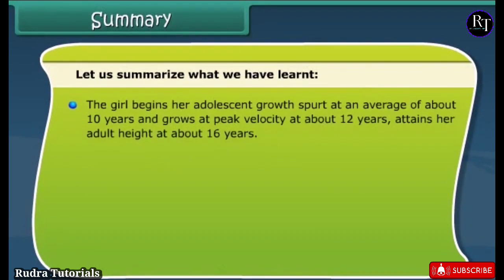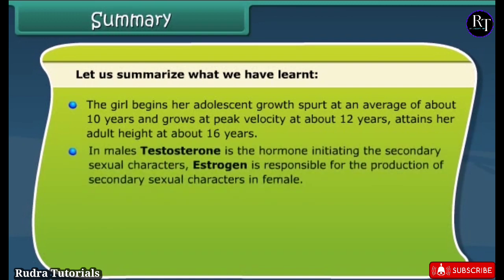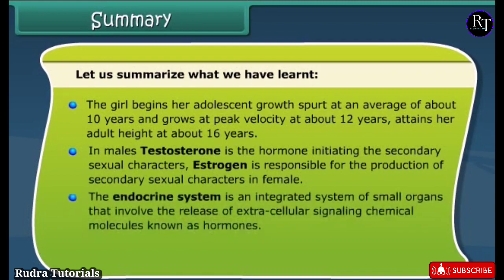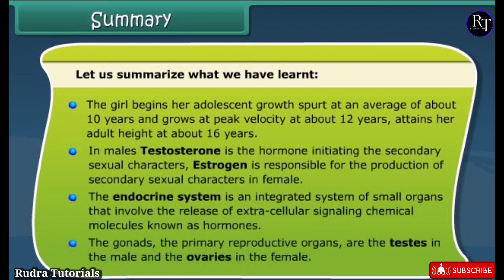The girl begins her adolescent growth spurt at an average of about 10 years, grows at peak velocity at about 12 years, and attains adult height at about 16 years. In males, testosterone is the hormone initiating the secondary sexual characters; estrogen is responsible for the production of secondary sexual characters in females. The endocrine system involves the release of extracellular signaling molecules known as hormones. The gonads — the primary reproductive organs — are the testes in the male and the ovaries in the female.